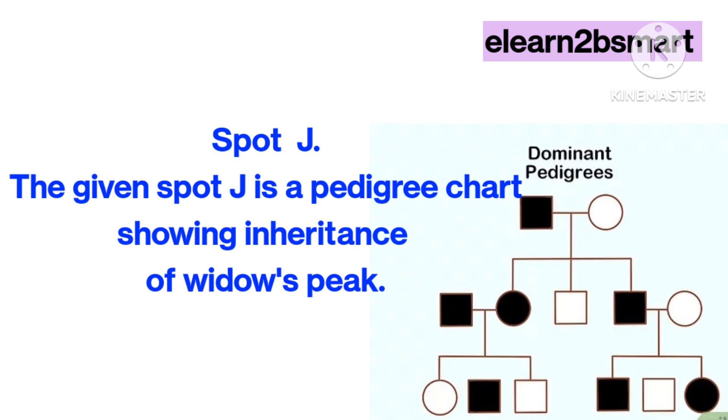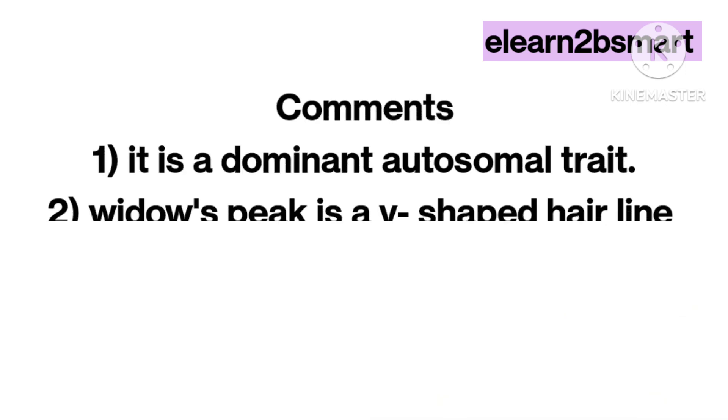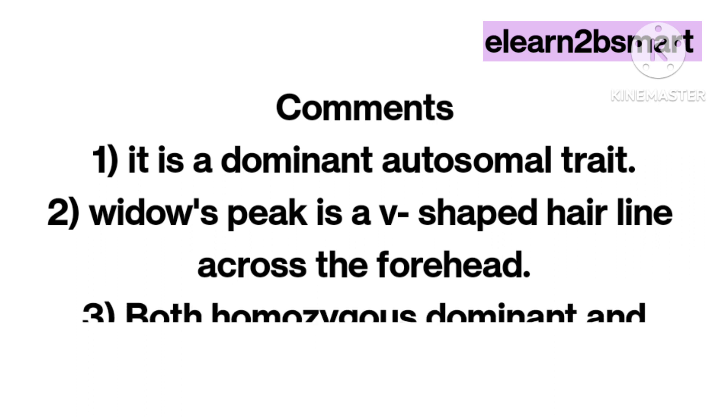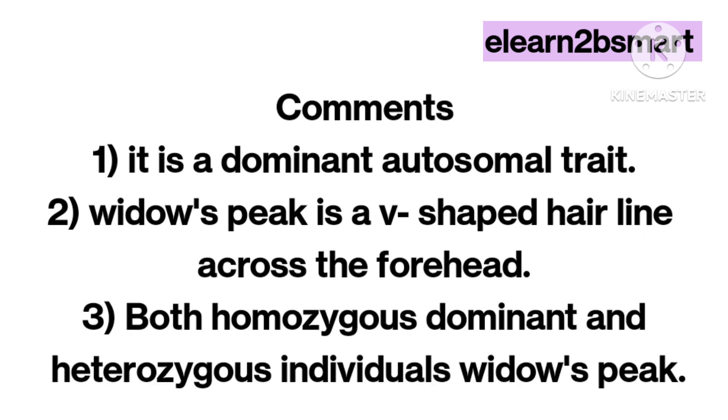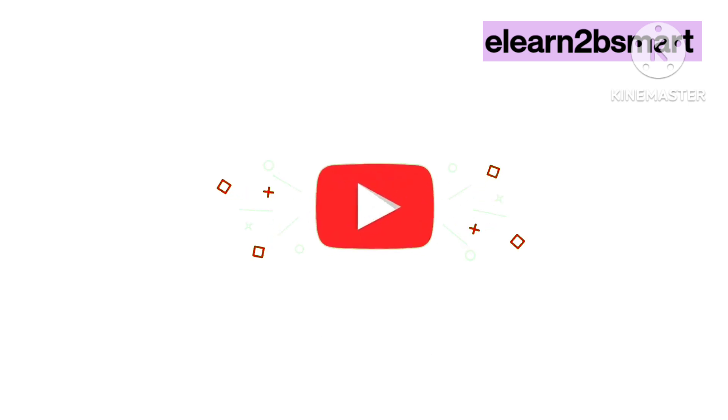Spot J identification: The given spot J is a pedigree chart showing inheritance of widow's peak. Comments: 1. It is a dominant autosomal trait. 2. Widow's peak is a V-shaped hairline across the forehead. 3. Both homozygous dominant and heterozygous individuals show widow's peak.